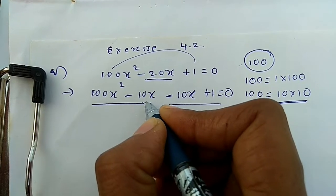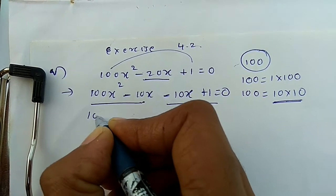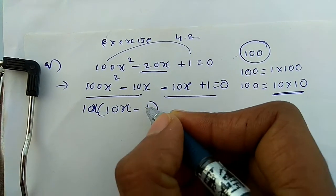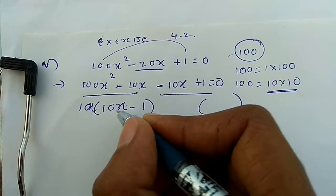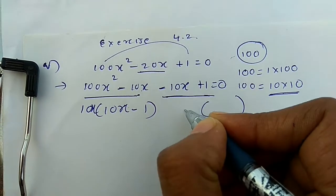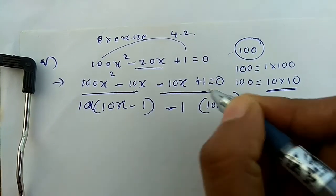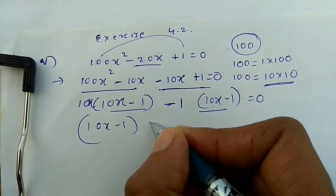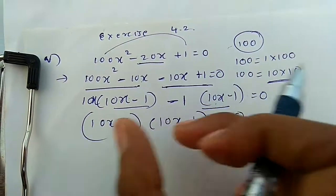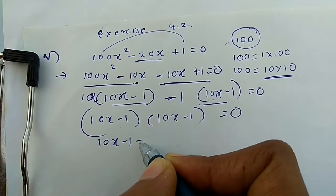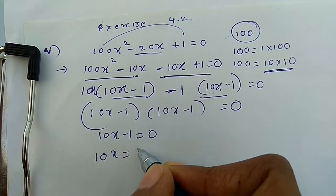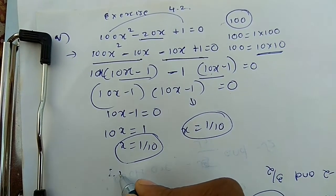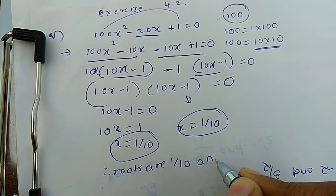Make pairs: from 100x² − 10x take 10x common: 10x(10x − 1). From −10x + 1 take −1 common: −1(10x − 1). So 10x − 1 is common, giving factors (10x − 1)(10x − 1). Equating 10x − 1 = 0 gives x = 1/10. Both brackets give x = 1/10. Therefore roots are 1/10 and 1/10.